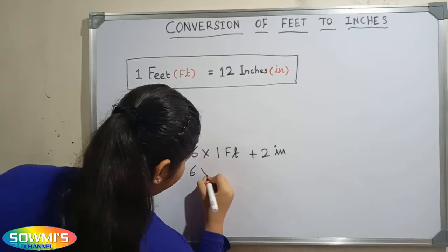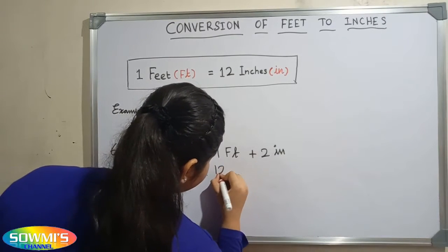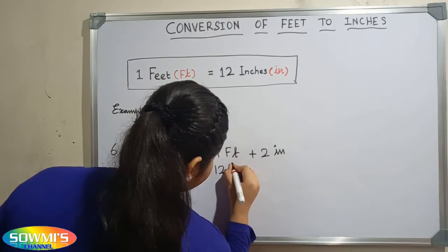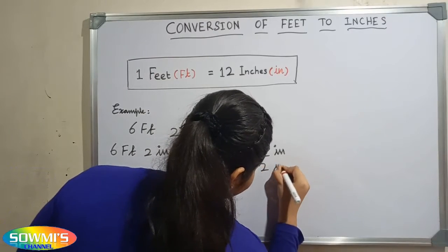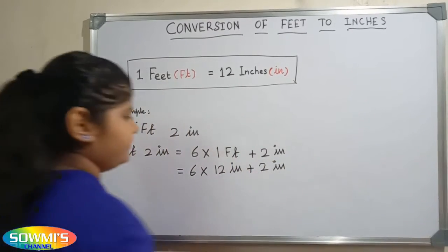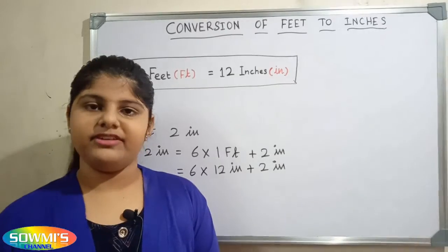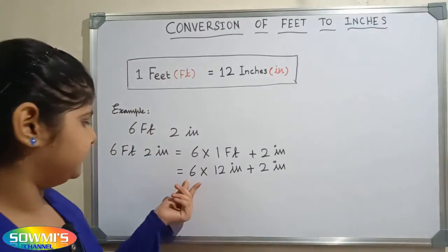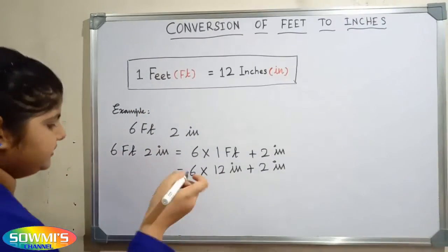So 6 times 12 inches plus 2 inches. First we have to multiply 6 and 12, so 6 times 12 is 72.